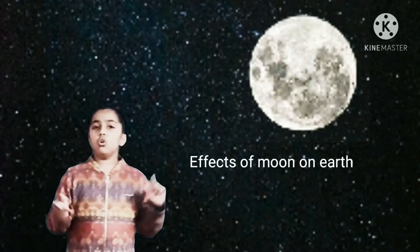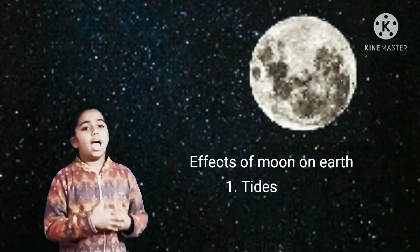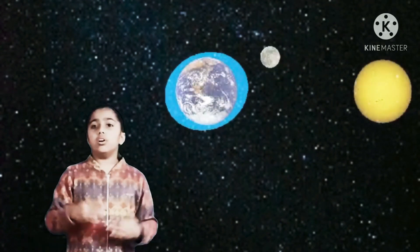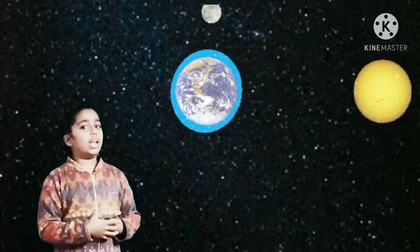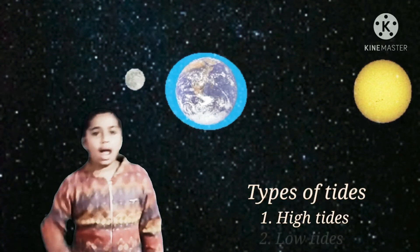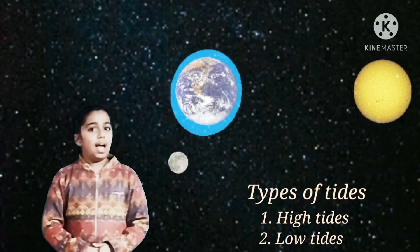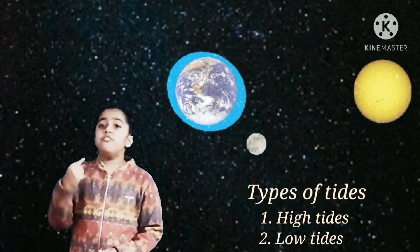There are two phenomena on the earth which are due to the moon. These are tides and eclipse. As the moon revolves around the earth, it seems to pull the earth's water towards it. This phenomenon is known as tides, which is of two types: high tide and low tide. Approximately every 12 and a half hours, there is one high tide followed by one low tide.